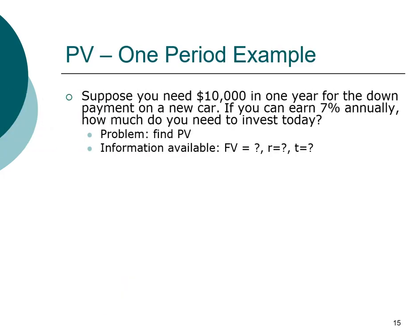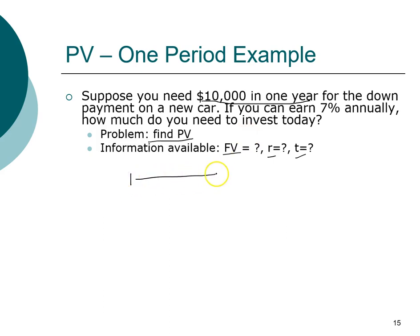Let's look at an example. You need $10,000 in one year for the down payment of a car, and you can earn 7% interest. How much do you need to invest today to reach that goal? To find the present value we must know at least three factors: the future value, the interest rate, and the investment horizon. We can draw a timeline — this is for just one year, so the time period is one. The $10,000 is our future value and the interest rate is 7%.